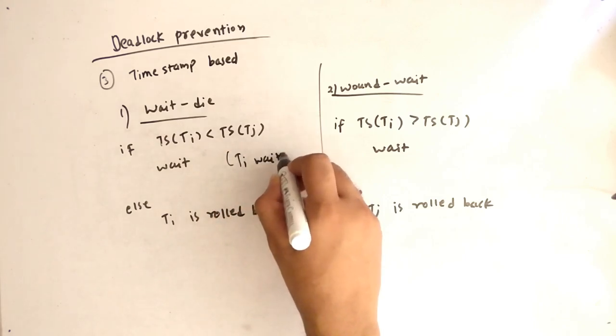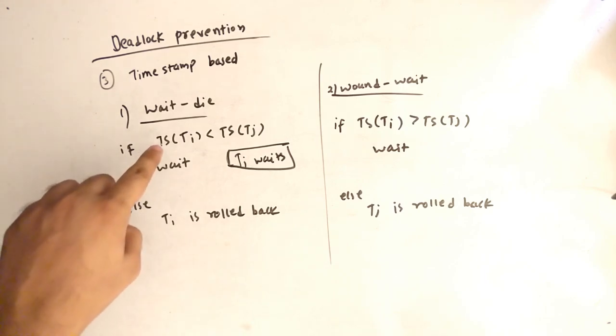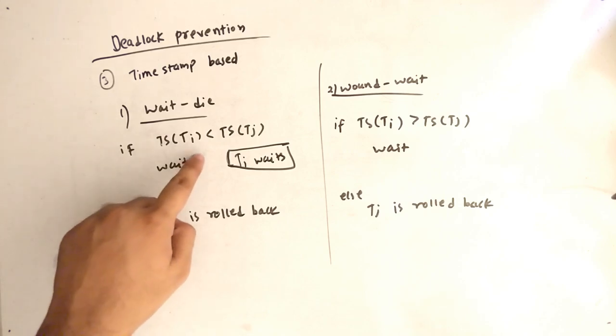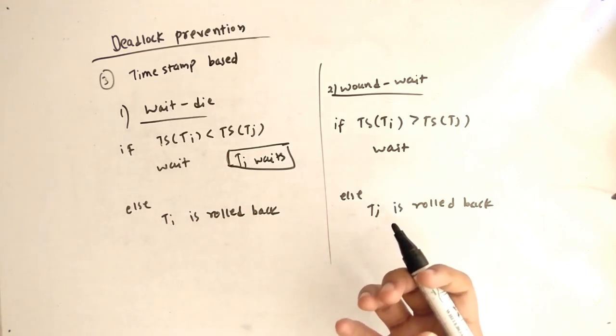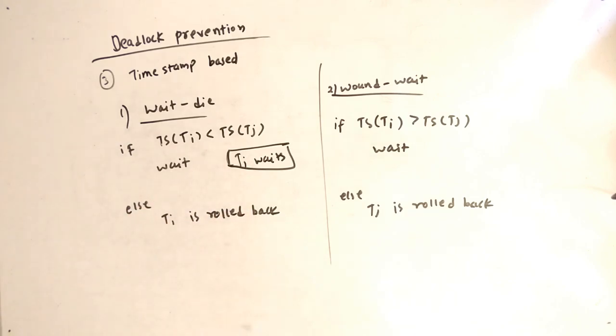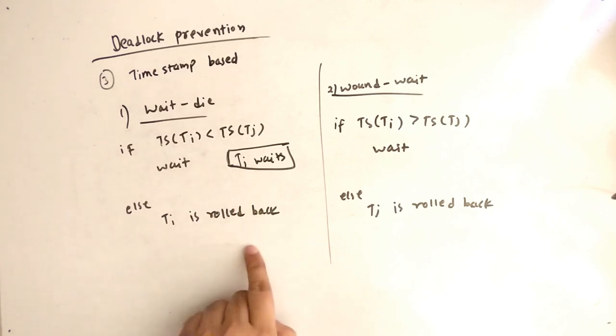Ti waits. Else Ti is rolled back. So let's understand this. Timestamp of Ti is less than timestamp of Tj means what? Ti is older than Tj. If younger transaction comes then timestamp would be greater of the younger transaction, obviously. So if this condition happens then Ti should wait. And if Ti is greater than timestamp of Tj, then it should roll back. This means it should terminate and restart again after some time.